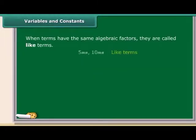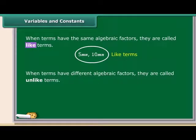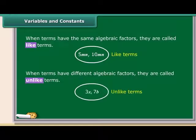When terms have the same algebraic factors, they are called like terms. And when terms have different algebraic factors, they are called unlike terms. Let us see an example.